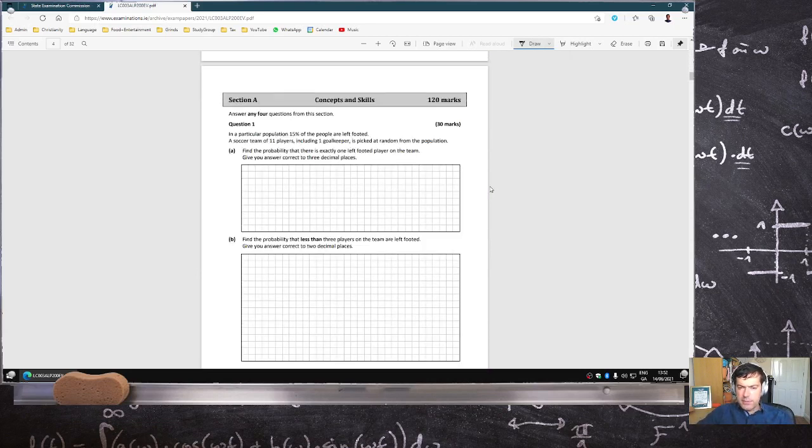In a particular population, 15% of the people are left-footed. A soccer team of 11 players, including one goalkeeper, picked at random from the population. Find the probability that there's exactly one left-footed player on the team.